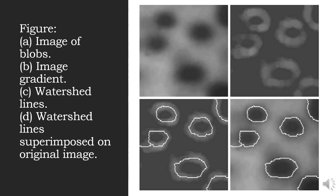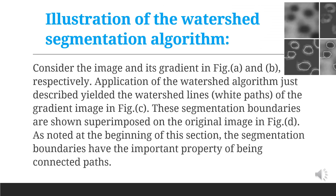We use this algorithm very efficiently by using only values of n corresponding to existing gray level values in g(x,y). We can determine these values as the minimum and maximum values of the histogram of g(x,y). Consider the image and its gradient in figures a and b respectively. Application of the watershed algorithm yields the output in c, and if we superimpose it on the original image, we obtain d. As noted at the beginning, the segmentation boundaries have the important property of being connected paths, which we can see in image d.